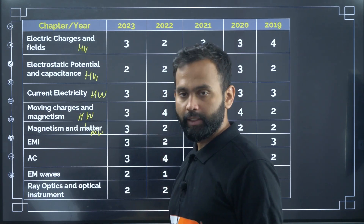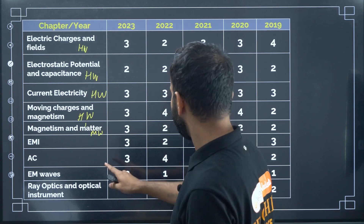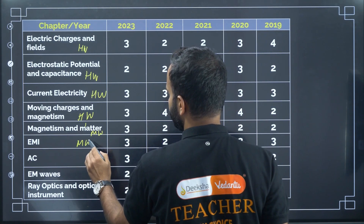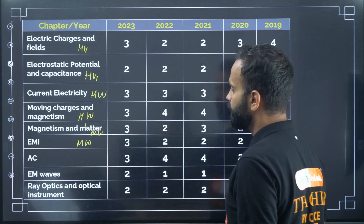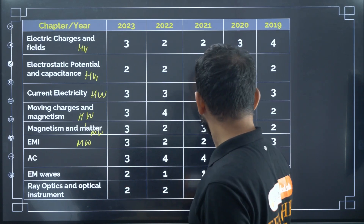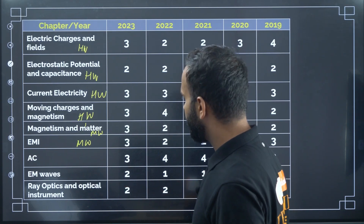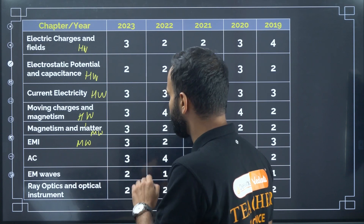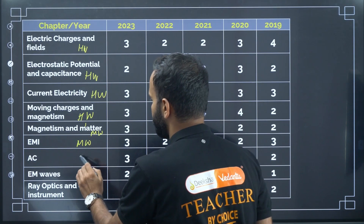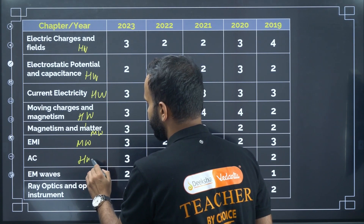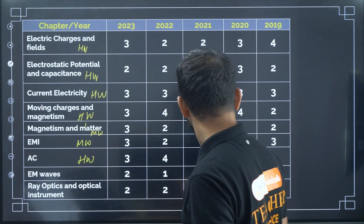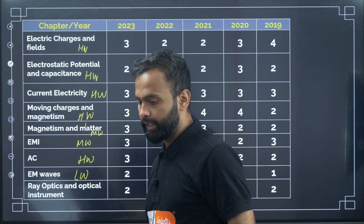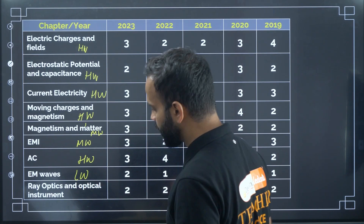EMI is a moderate weightage chapter — they ask two to three questions per year. AC is a high weightage chapter; every year they ask minimum three to four questions from this chapter. EM Waves is a low weightage chapter.